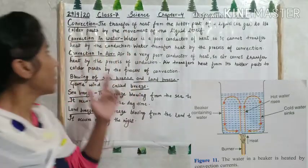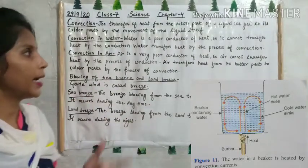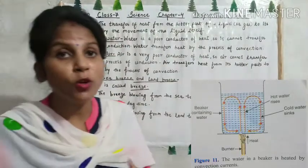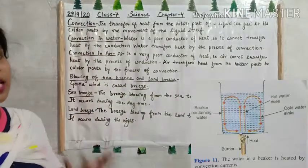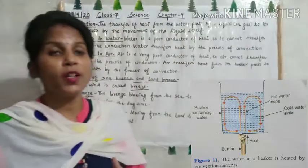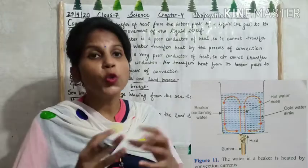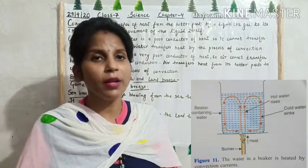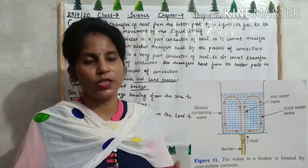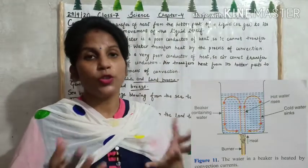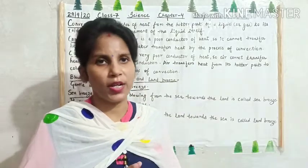Convection in water: water is a very poor conductor of heat, so it cannot transfer heat by conduction. Why? Because in liquids, the particles are loosely packed. Water transfers heat by the process of convection. So whatever heat transfer happens in water, it will be through the process of convection.